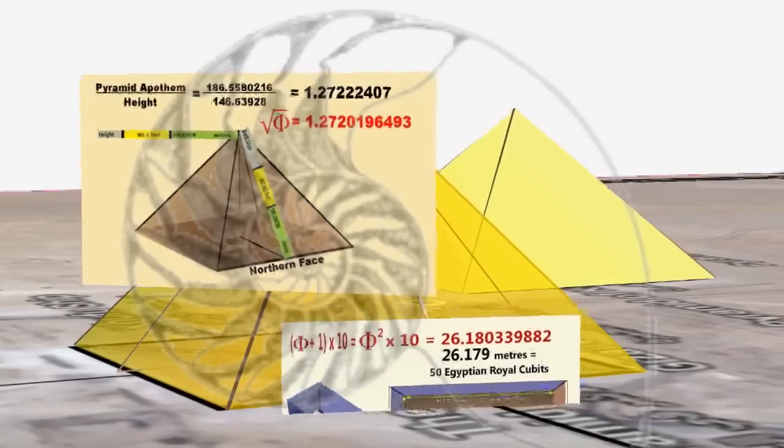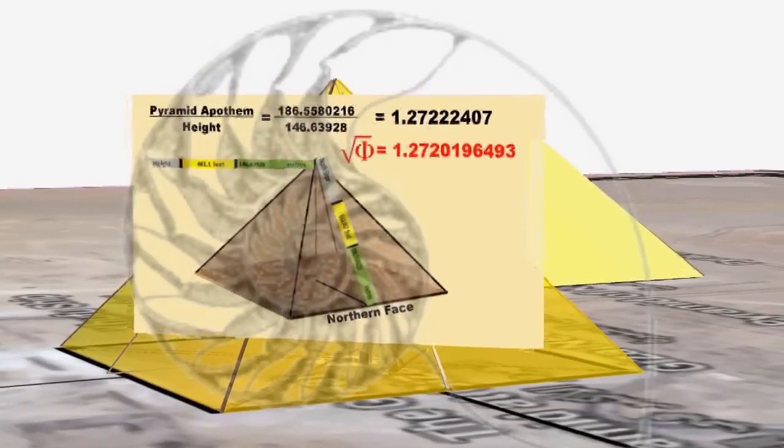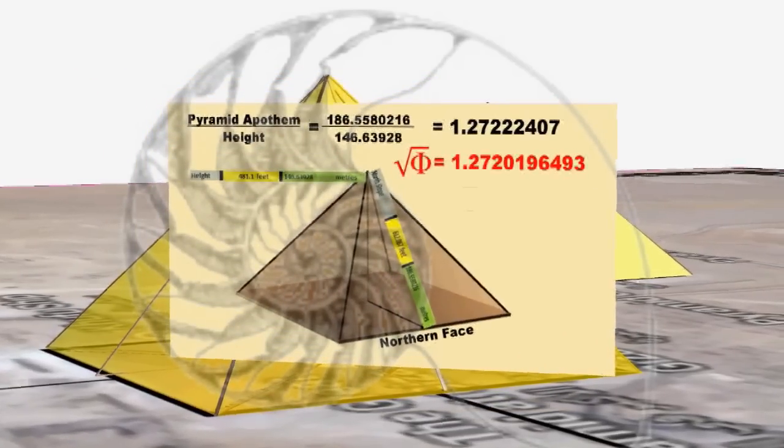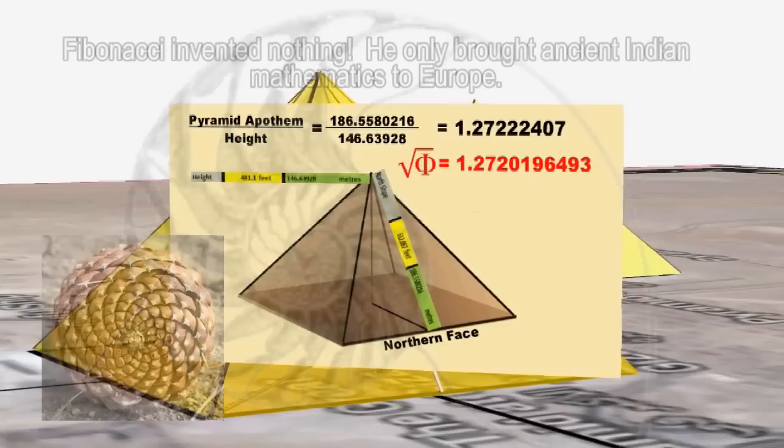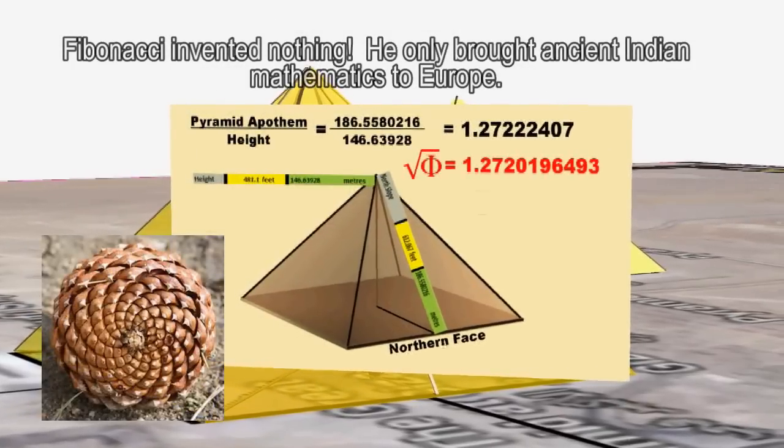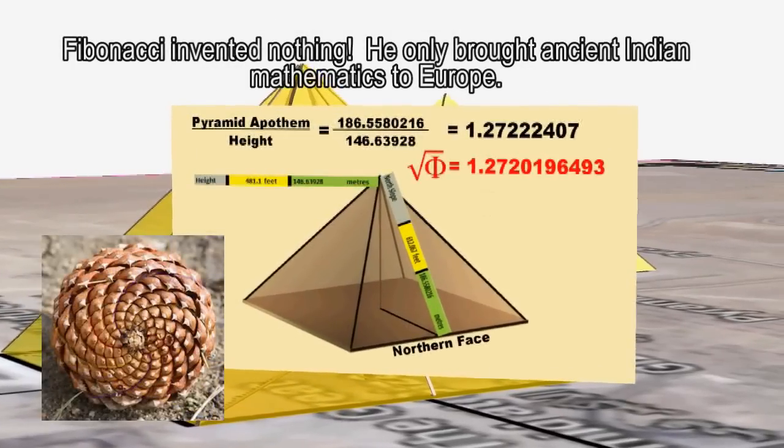You see it? I'll show it to you. Six is two times three. Fifteen is three times five. Forty is five times eight. Two, three, five, eight. Who do we appreciate? Fibonacci, of course.